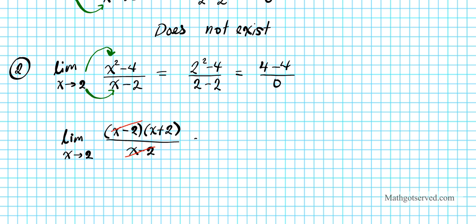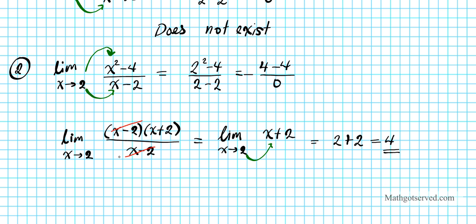If you have a removable discontinuity at a point, the limit still exists because it approaches the same value from the left and the right. So this reduces to the limit as x approaches 2 of x plus 2 — the discontinuity has been removed. Now we'll just plug in the 2 into the x and we're going to have 2 plus 2, and the answer is 4. So anytime you have an undefined situation like this, always go back to the original problem and see if you can reduce it. If it's not reducible then you know that the limit doesn't exist.